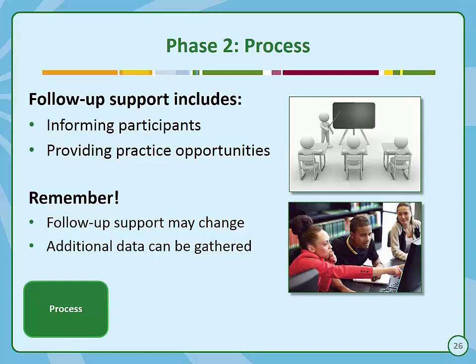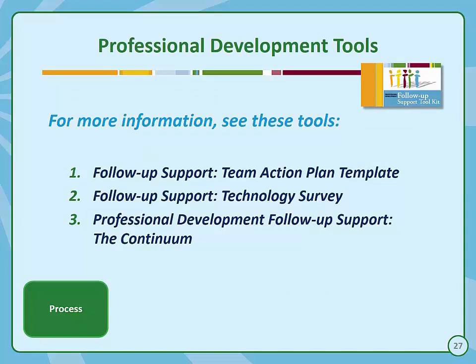Now that you understand Phase 1 Planning, let's take a minute to talk about Phase 2. This phase takes place as the training event is occurring. Key follow-up support activities during the training event are an important part of the follow-up process. Participants should be informed of the follow-up support plan during professional development events and should be allowed to practice the new skills being taught to help them transfer these skills once the event is over. During an event, you can collect additional data about your participants to help identify the best follow-up options. The PD Follow-up Support Toolkit also includes a number of tools to help you during Phase 2, found in the Phase 2 Process section of the Follow-up Toolkit.